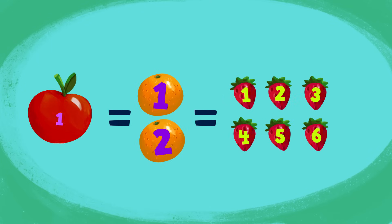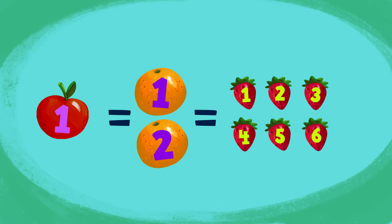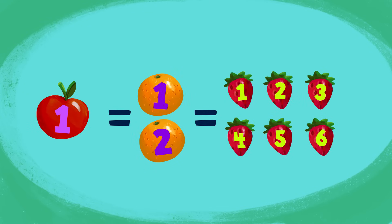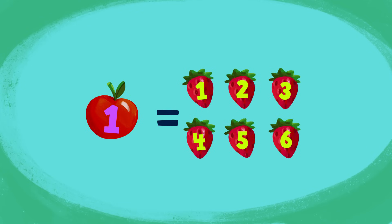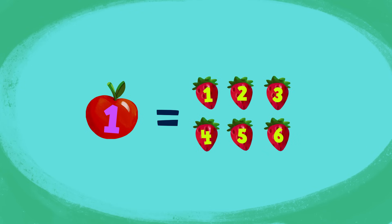So, if one apple equals two oranges, and two oranges equals six strawberries, we can say one apple is equal to six strawberries! Oh, cool!